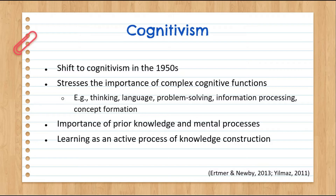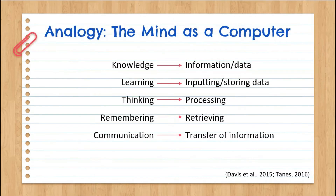In cognitivism, learning is understood as an active process of knowledge construction. It isn't looking so much at what learners actually do, but more so what they know and how they come to know it. A common analogy is the mind or brain being like a computer — knowledge as information or data, learning as inputting and storing data, thinking as processing, remembering as retrieving, and communication as the transfer or exchange of information.